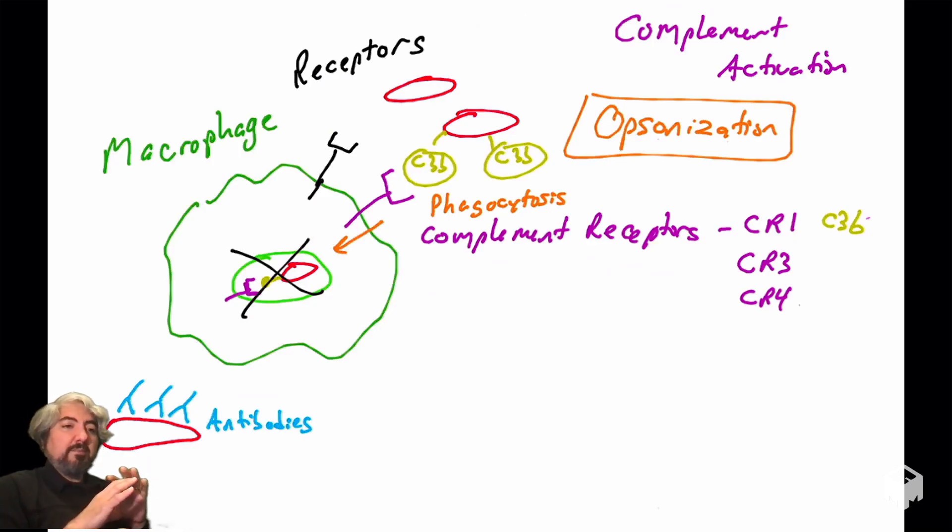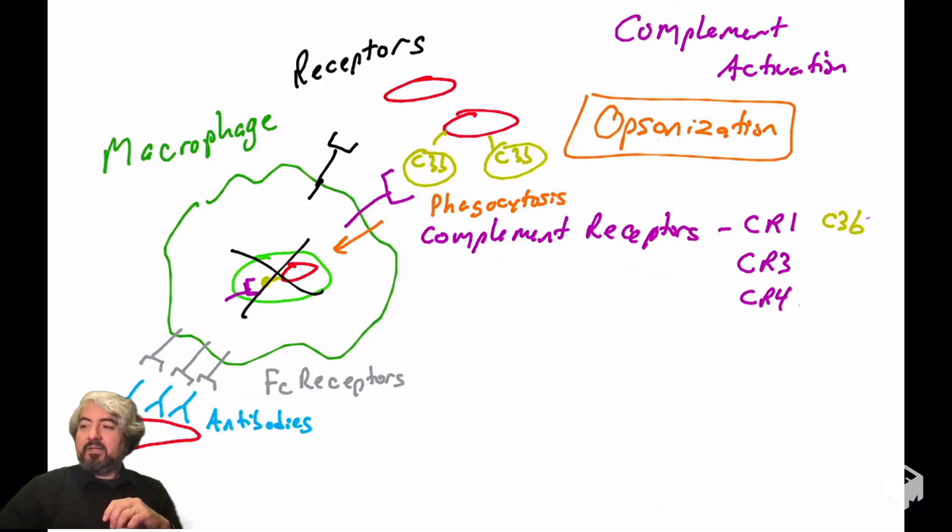When those antibodies bind to a pathogen, we'll talk about antibody effector functions in later videos, but antibodies covering a pathogen, one way those antibodies work to get rid of the pathogen is the antibody effector function of opsonization, because macrophages are cells that have other types of receptors. Here we're going to call them Fc receptors. Fc receptors bind antibodies, and when that happens, that macrophage will envelop that pathogen, take it into its vesicular system and destroy it.